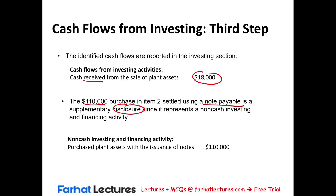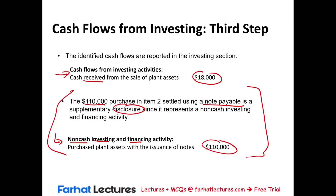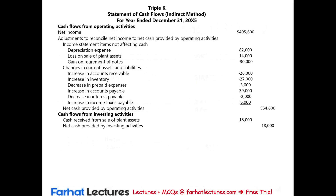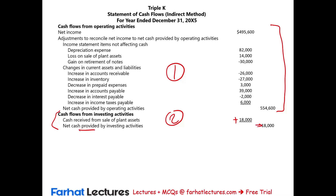We need to disclose the non-cash investing and financing activity: Triple K purchased a plant asset with the issuance of a note for $110,000. For the investing section itself, we sold a plant asset and received $18,000 in cash. So the investing section shows net cash provided of $18,000. In the prior session we covered the operating section — this is the second section, the investing section.